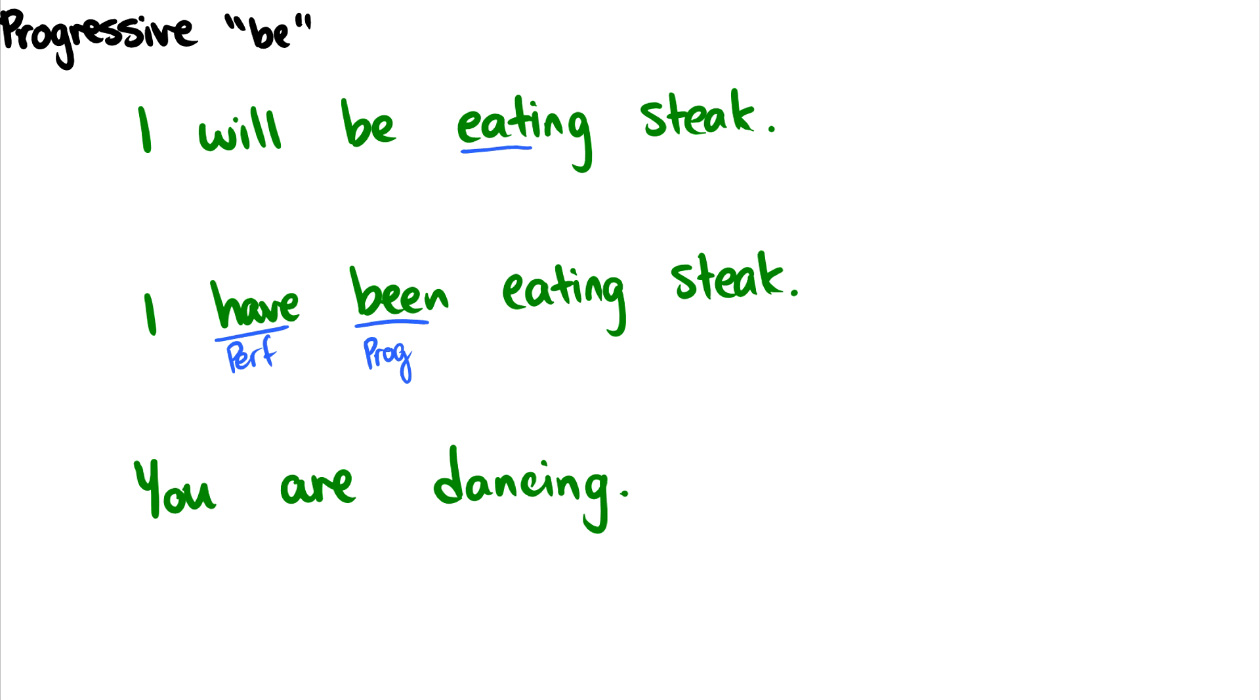We notice that the perfect morphology is now on the progressive and the progressive morphology, this ing, is on the main verb. Similarly, in the first sentence, I will be eating, this ing suffix is a progressive suffix. Okay, the third example, you are dancing. Again, this is just another form of be and we see this ing suffix at the end signifying that it's progressive.